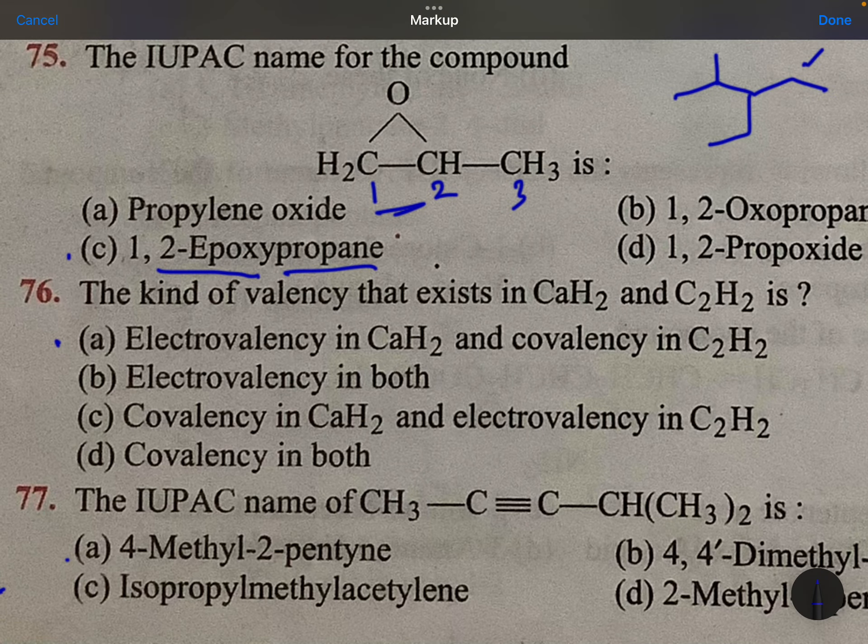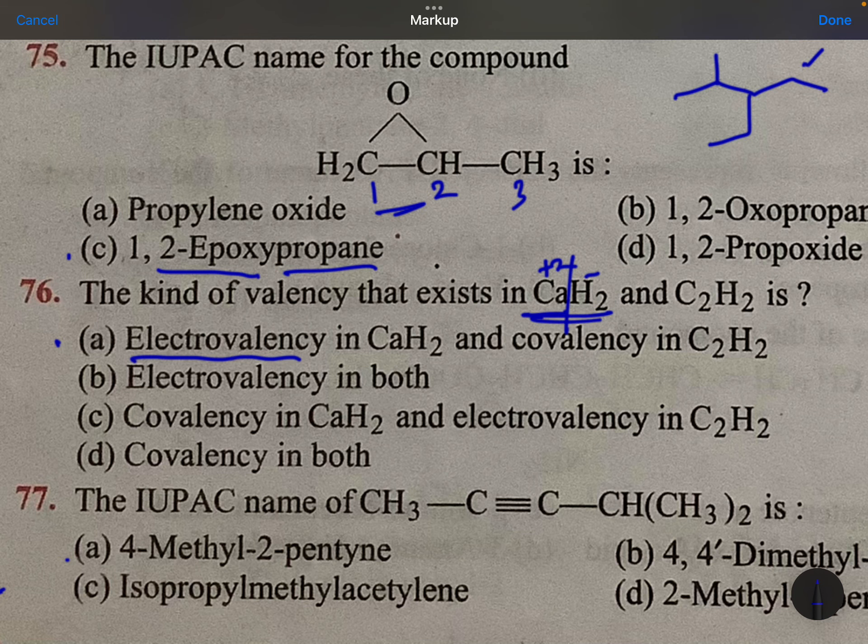The kind of valency that exists in CaH2 and C2H2. Ca plus 2, H2 minus. This is ionic. Electrovalency. It is two non-metals covalency.